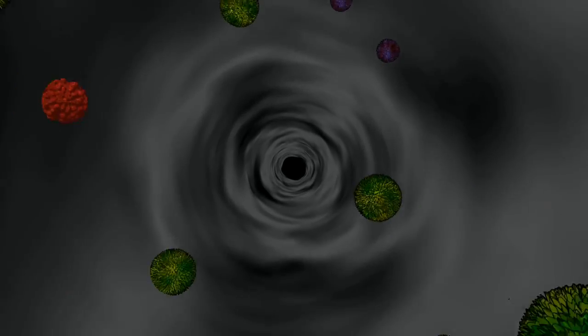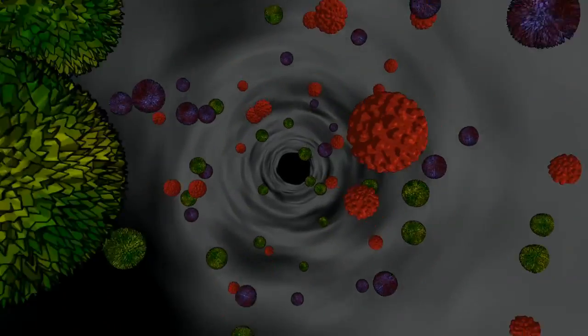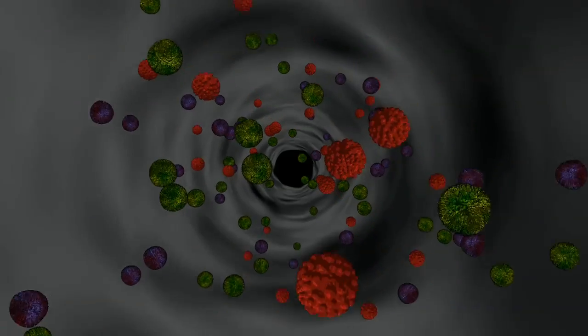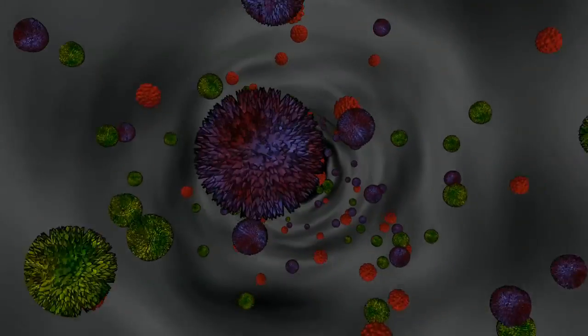Our immune system responds to infections by recruiting the help of protective cells such as T cells, B cells, and macrophages, and evolve the help of other immune system molecules called cytokines.